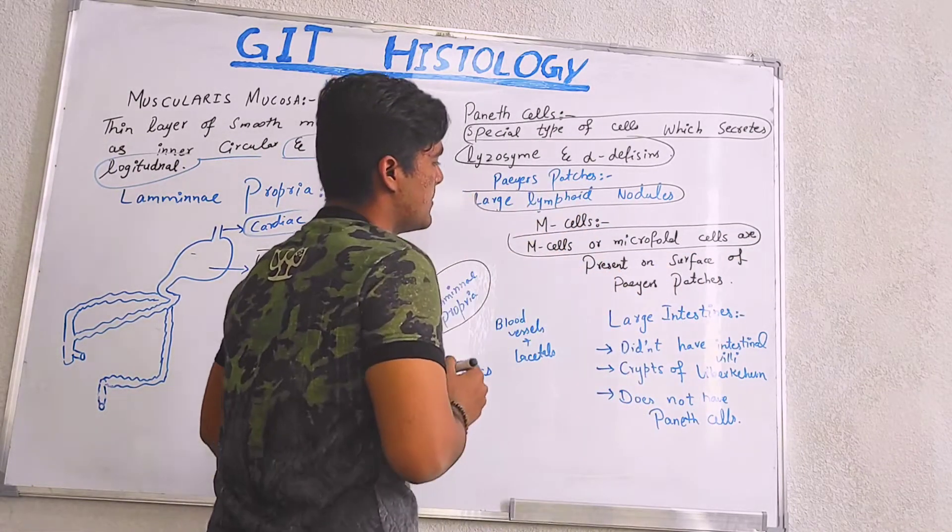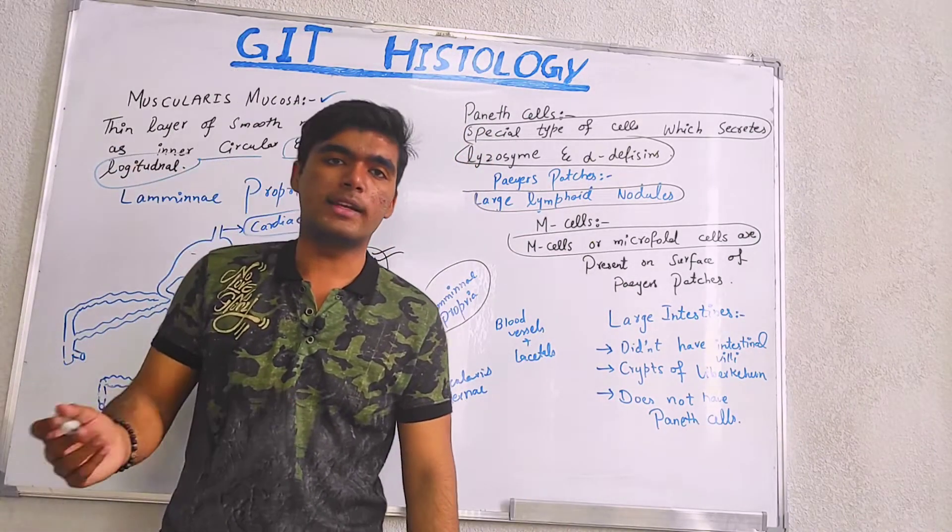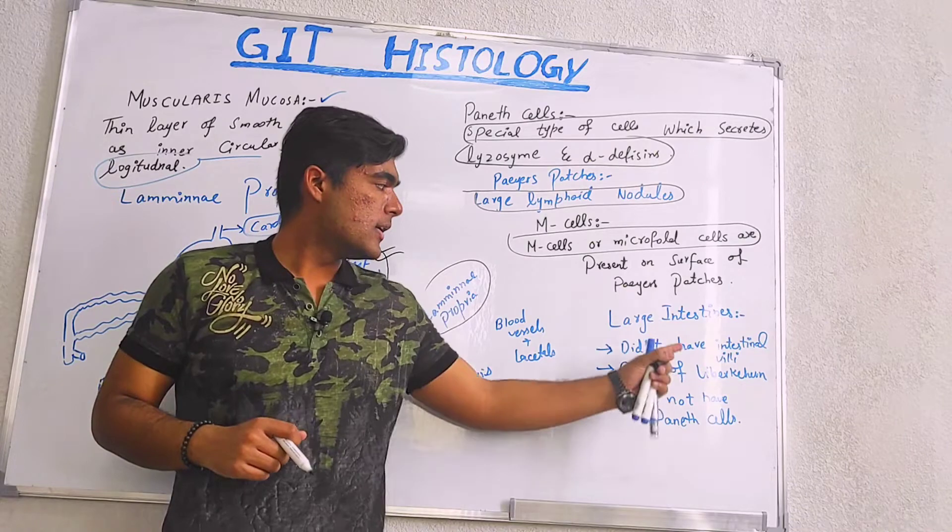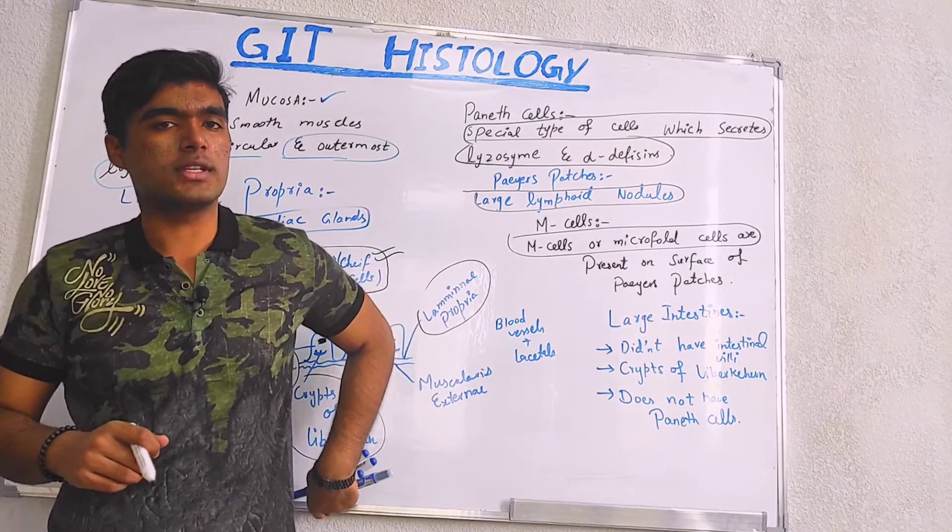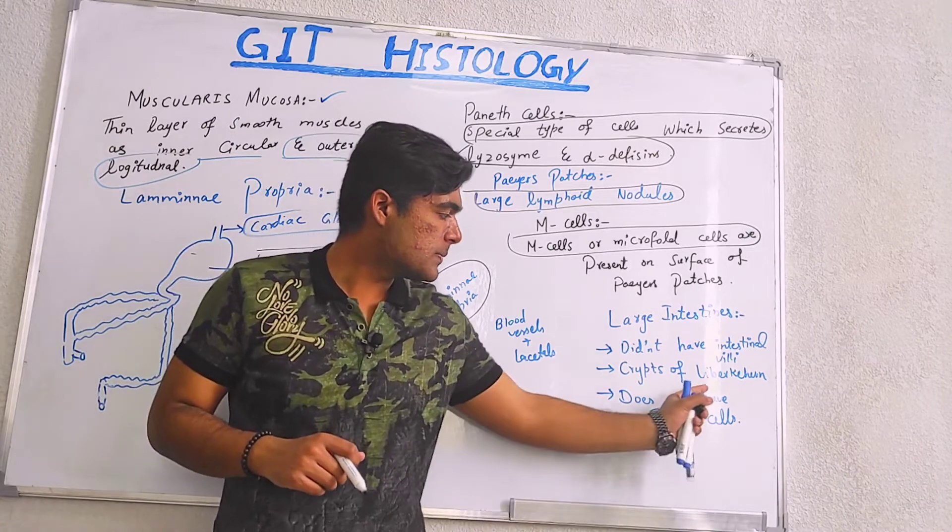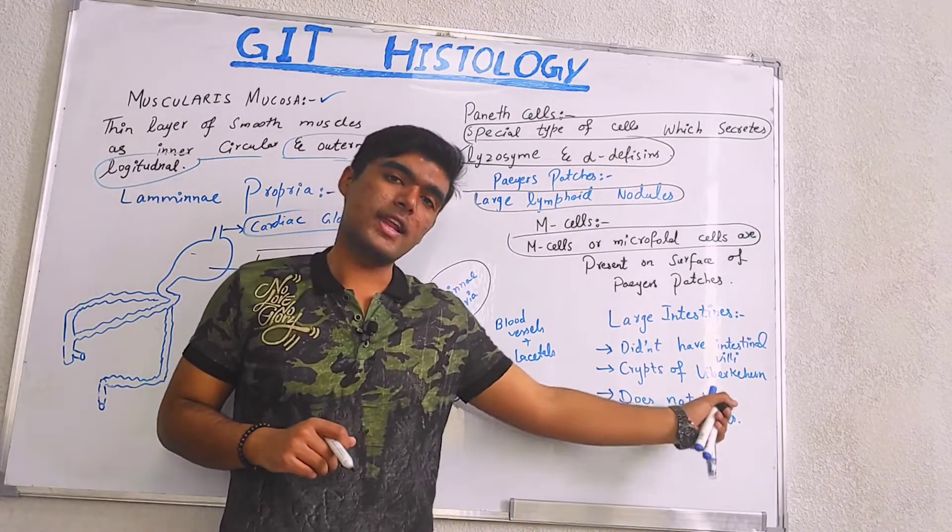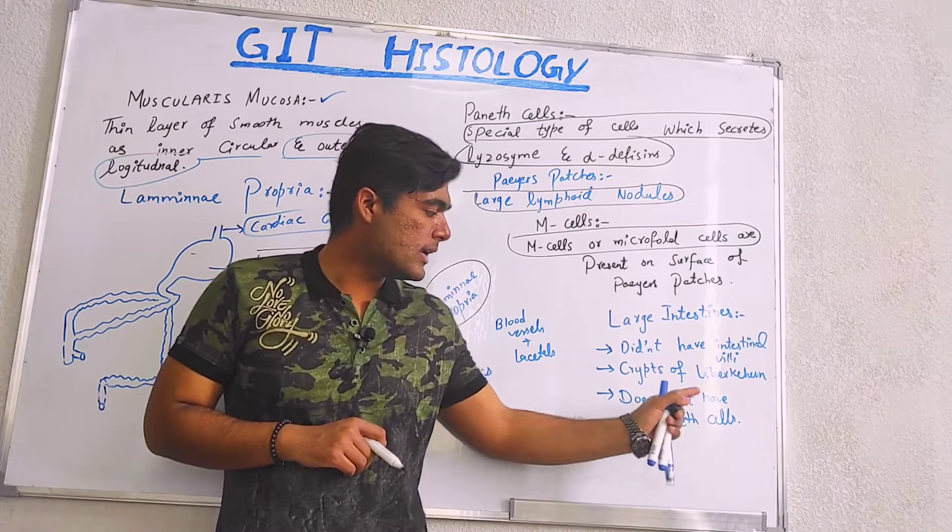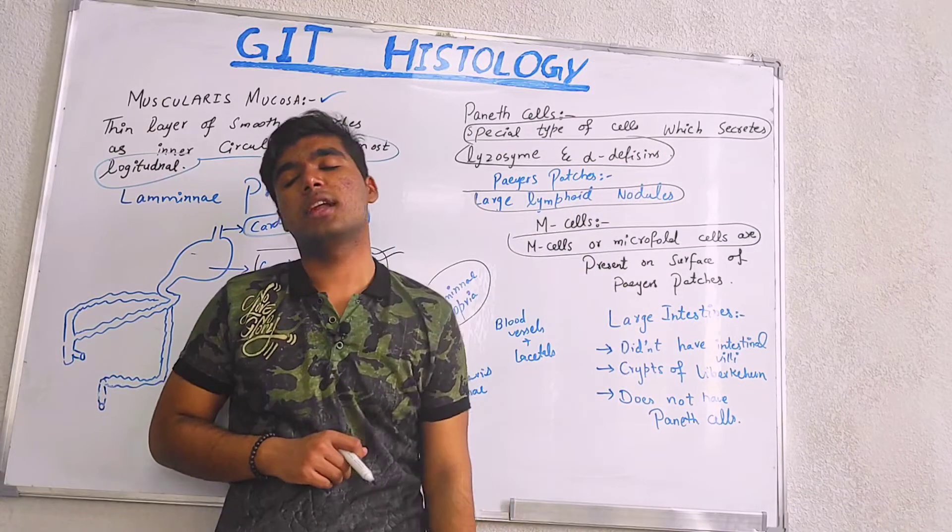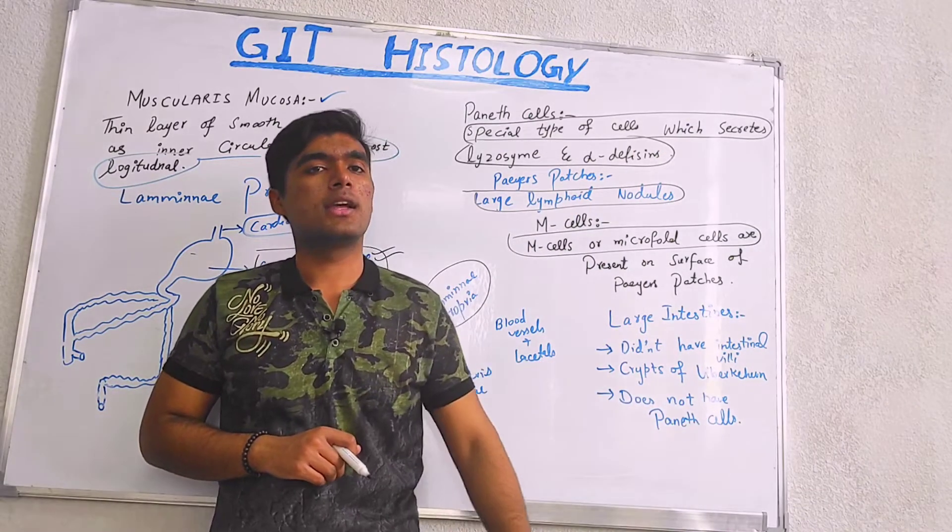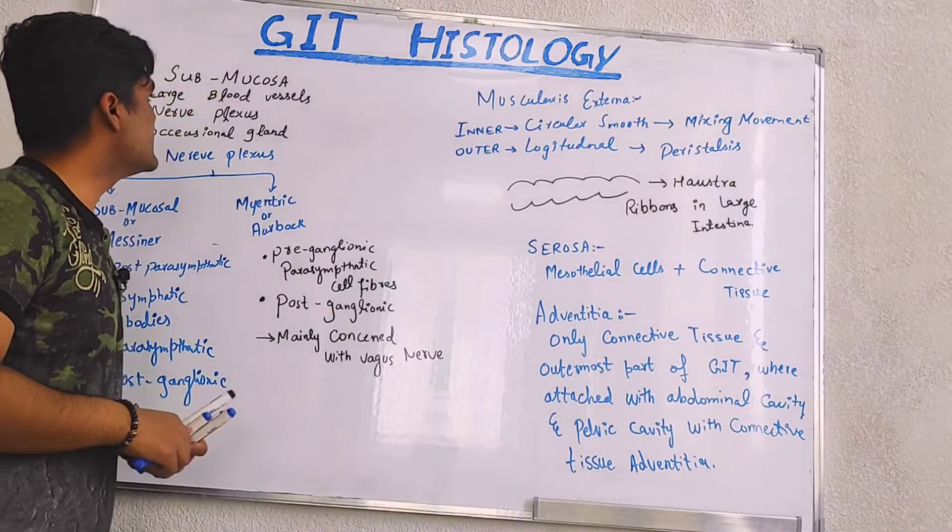So, what is the difference between small and large intestines? Large intestine did not have intestinal villi while small intestine possesses intestinal villi. Crypts of Lieberkühn are present in small intestine as well as in large intestine, while Paneth cells which have main role in lysozyme secretion and alpha-defensin are absent in large intestine. Paneth cells are present in small intestine.